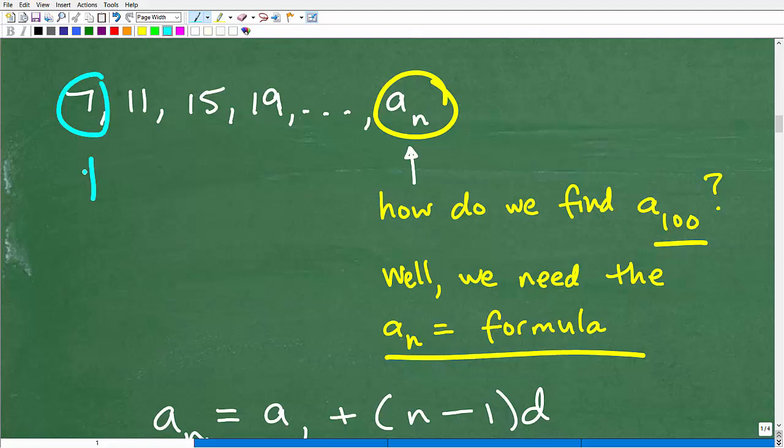So we're going to need a sub 1, which we have, right? So a sub 1 is 7. And we can see here that the common difference is 4. That's what we're adding to get to the next value in this sequence.